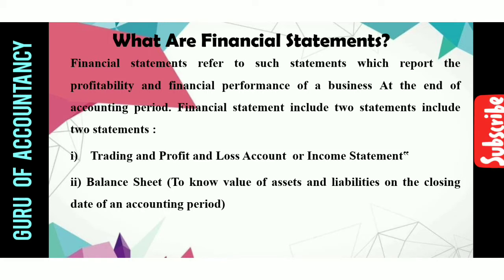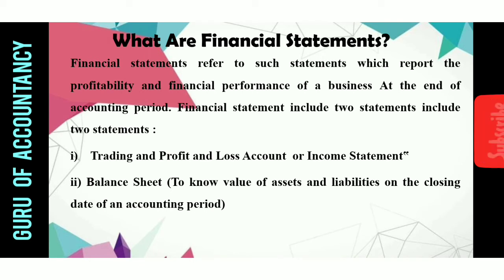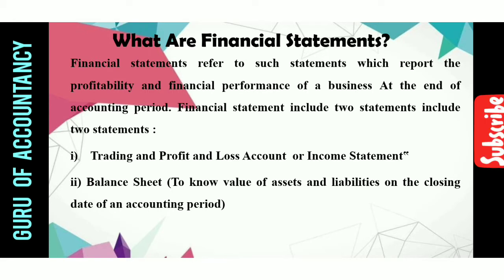Financial statements are prepared at the end of the accounting year. Financial statements include basically two statements. One is Trading and Profit and Loss Account, also known as the income statement. The second is the Balance Sheet. Trading and Profit and Loss Account gives information about profitability of the business organization, whereas Balance Sheet gives information about assets and liability position of business at the end of the accounting year.